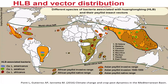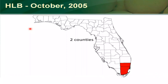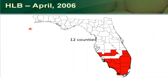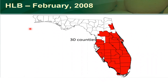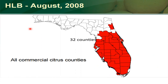In Florida, the vector was first identified in the state in 1998 and in 2005 the actual disease was first detected in citrus. By the time it was first detected it had already spread a good way and was pretty well established — first found in two counties in 2005, increasing to 12 counties in 2006, 24 in 2007, and by early 2008 it was in 30 different counties. By the end of 2008 all the commercial citrus counties in the state had experienced the disease, and right now the future is not looking particularly great for citrus production in Florida.